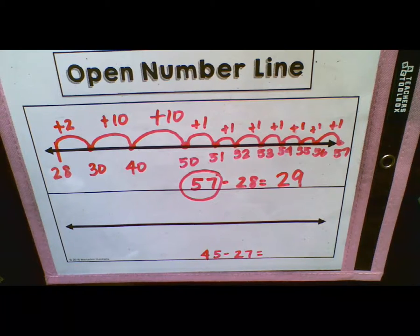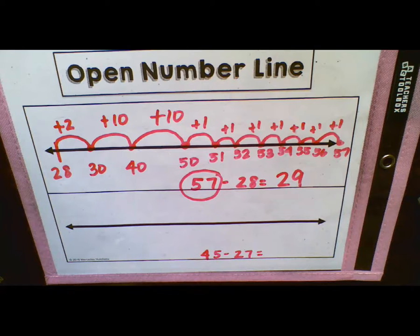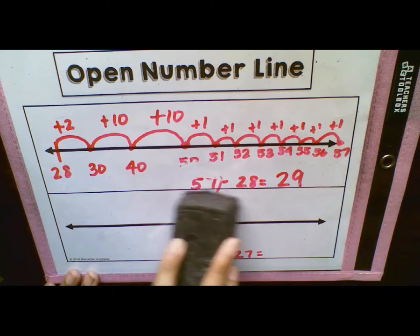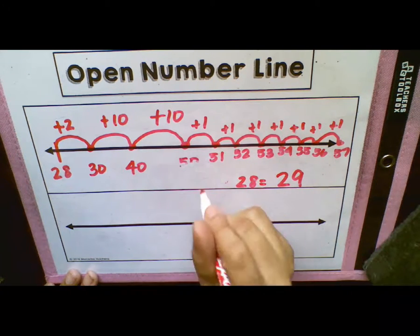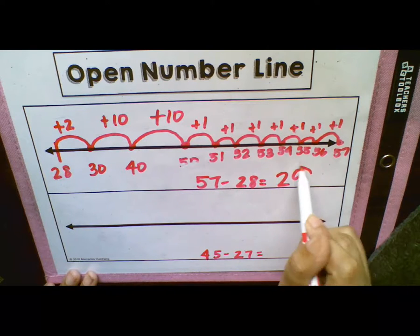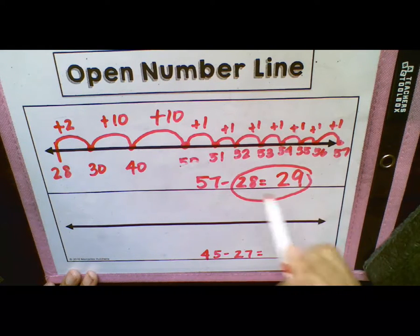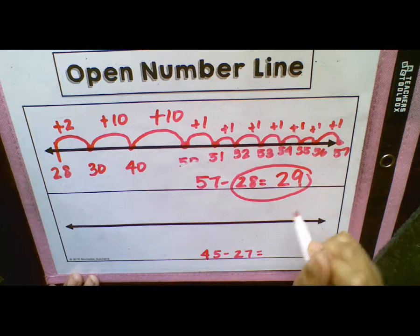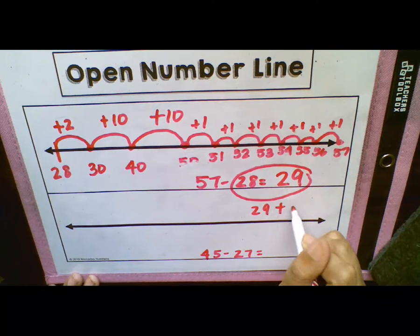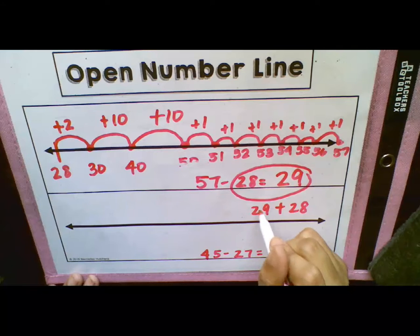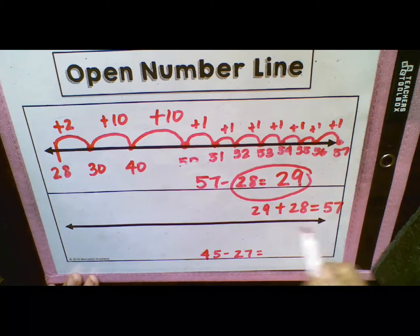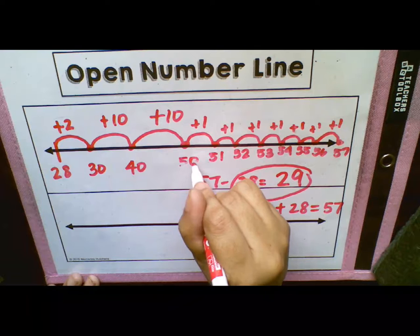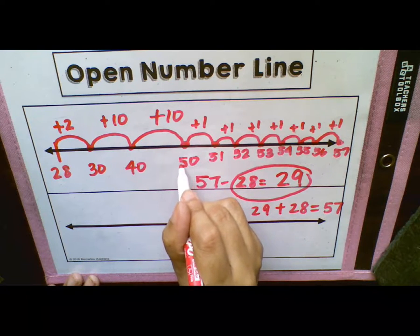Now another big thing in second grade that we have students do is we want them to always go back and check their work. Because, let's face it, it's easy to make a simple mistake. So if students are wondering if their answer is correct, all they have to do is add the sum and the last number together. So they would add 29 plus 28. And if when you add 29 to 28 together, your answer is 57, then you know that you are correct. That is how you check your work.